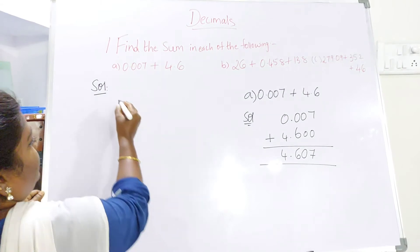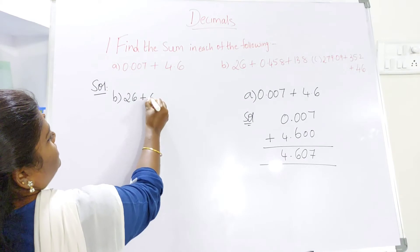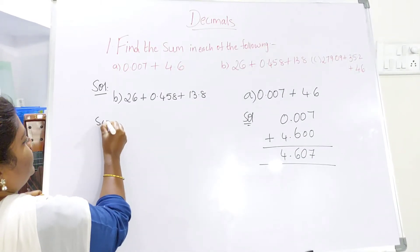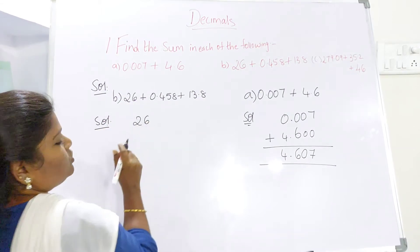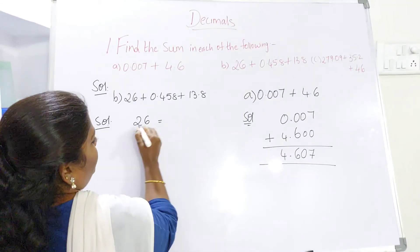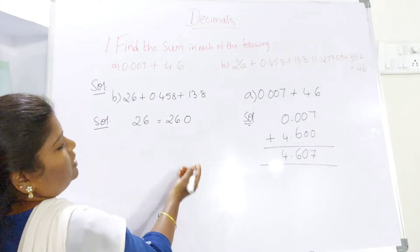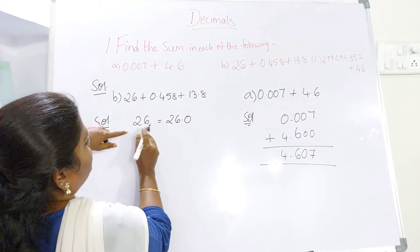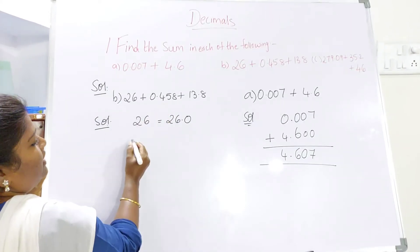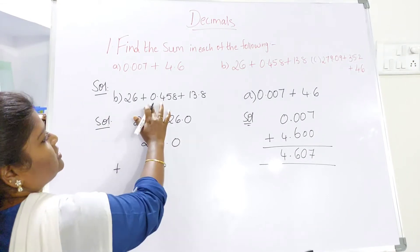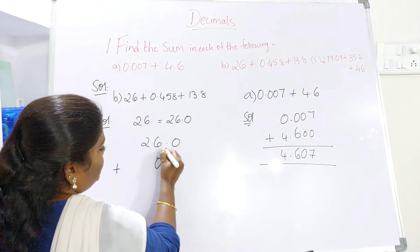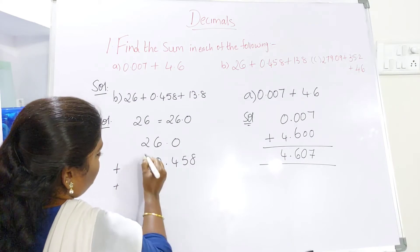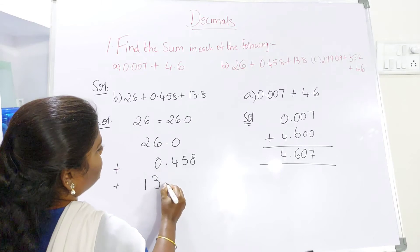Now let's take the next one. Part B: 26 plus 0.458 plus 13.8. Now in an earlier class I told you that if any number is given and there is no decimal point, in decimal fractions 26 means 26.0. So 26 can be written as 26.0. Place them accordingly: 26.0 plus 0.458, so 0 comes under 6. Next one is 13.8, so 1 will come under 2, 3 under 6.